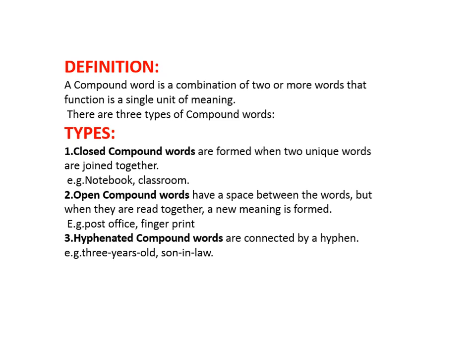Open compound words have a space between the words, but when read together a new meaning is formed — for example: post office, fingerprint. Hyphenated compound words are connected by a hyphen — for example: three-year-old child, son-in-law, father-in-law, passer-by, attorney general.